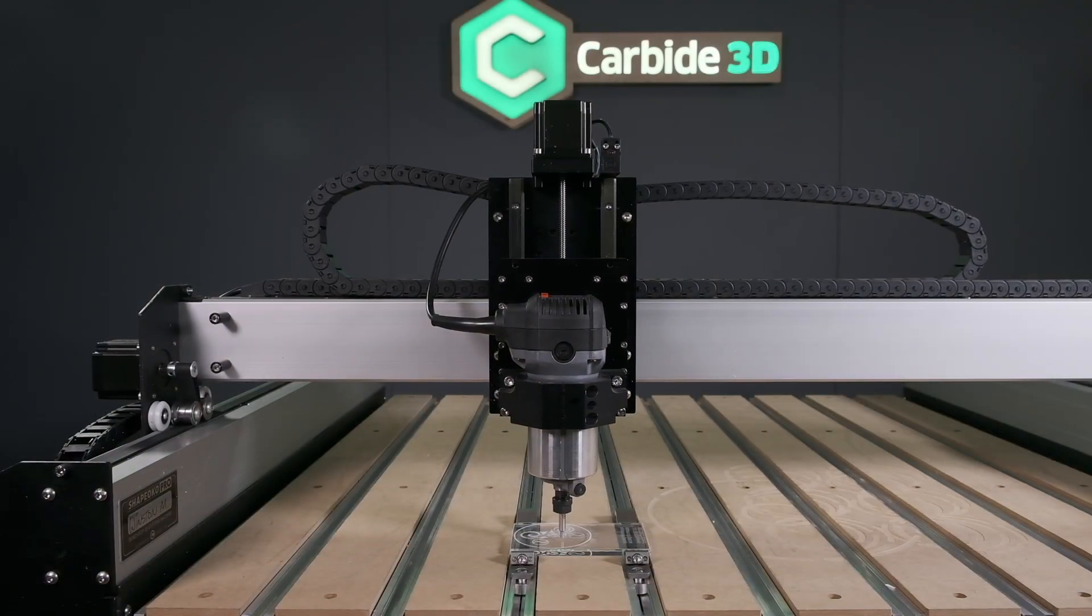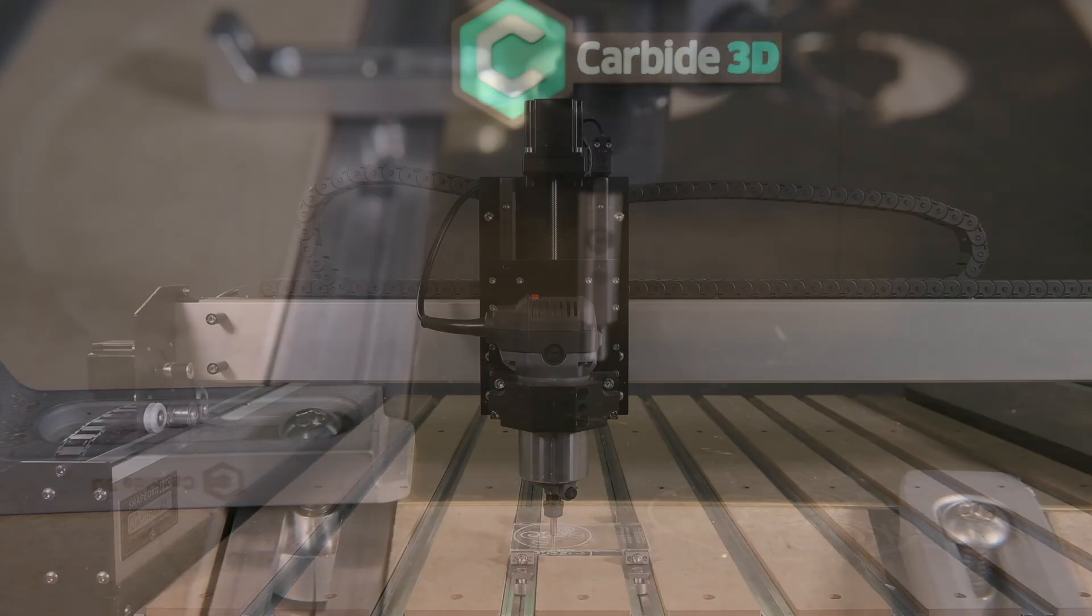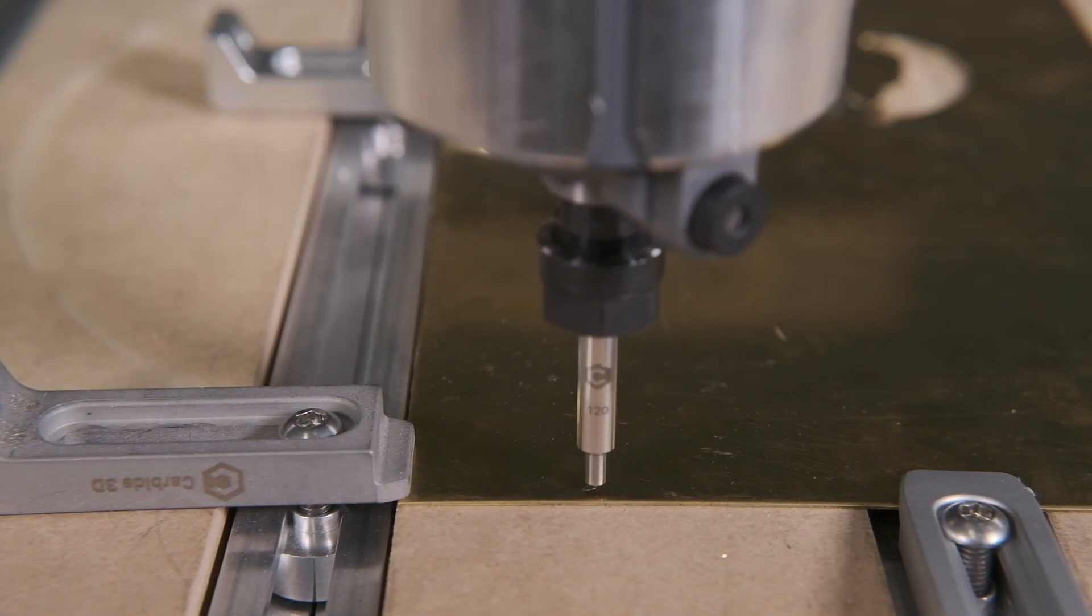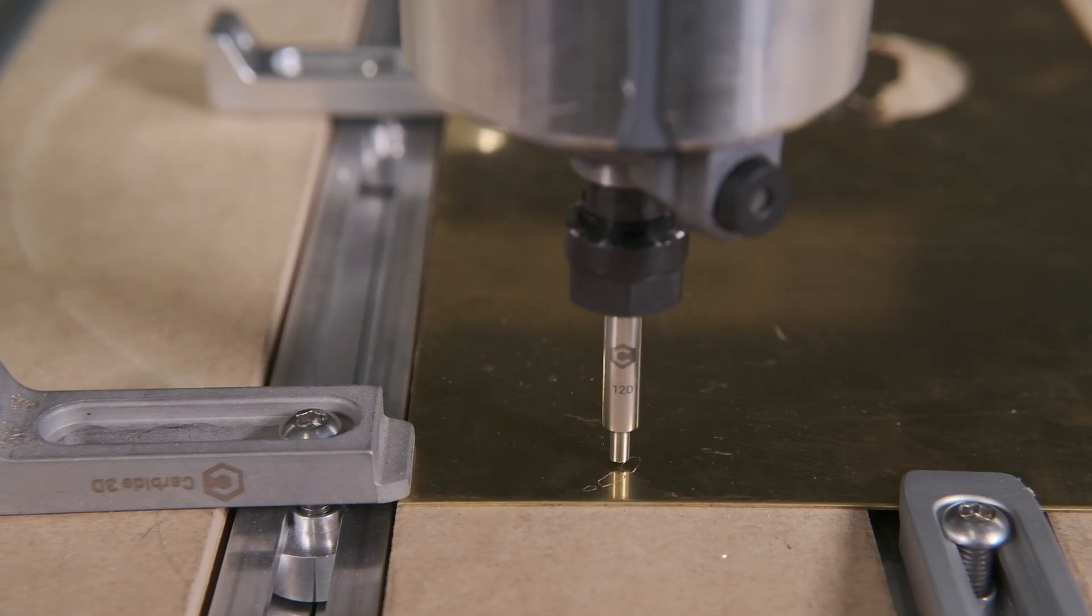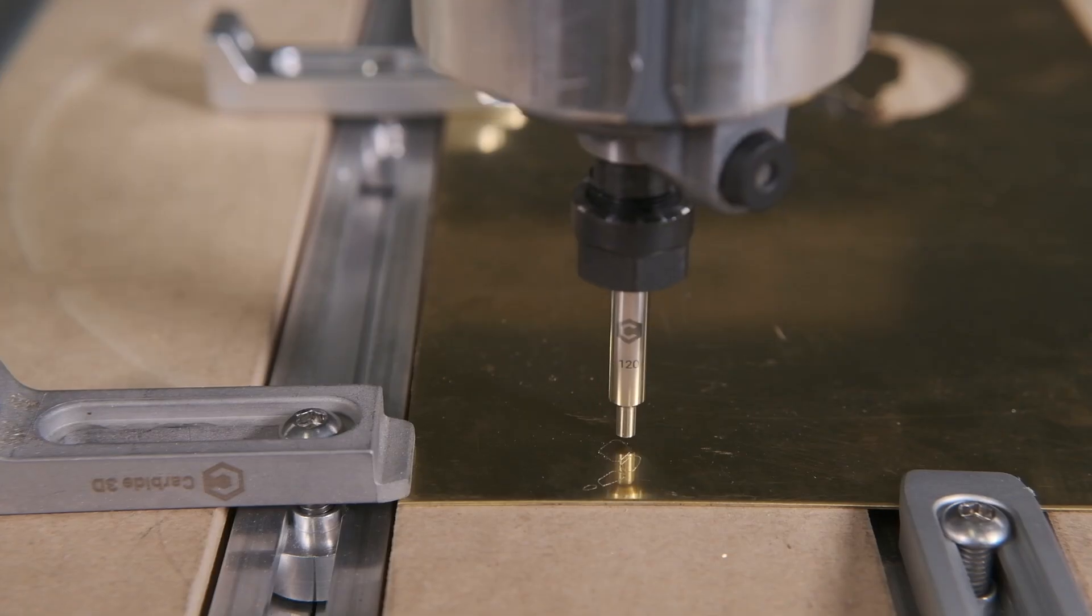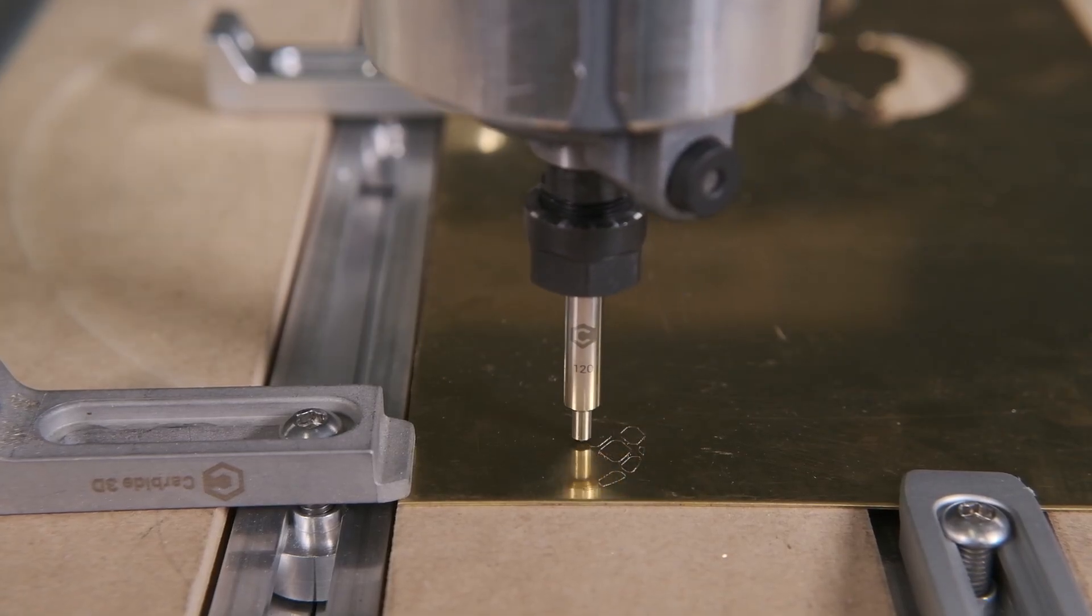Drag engravers are unique tools that do one thing only, but do it really well. Mark a workpiece with an ultra-fine line. A sharpened industrial diamond is fixed to the tip of a spring-loaded shaft, which applies steady pressure to your workpiece, leaving a precise scratch on the surface just a few thousandths of an inch deep, with a width on the same order of magnitude.